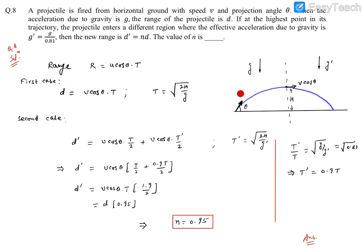Now, let's say this is initial velocity u theta. This is our original projectile. So range is given as the horizontal component of velocity into time of flight. For the first case, d is going to be v cos theta into t, where t is under root 2h by g.